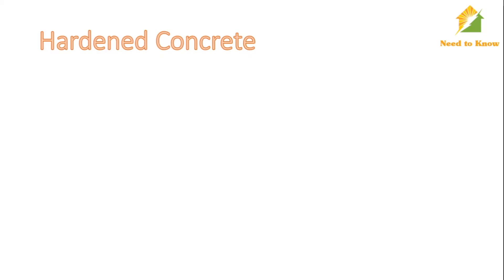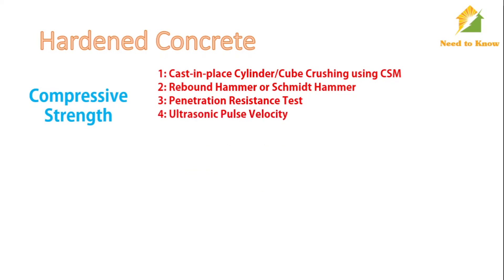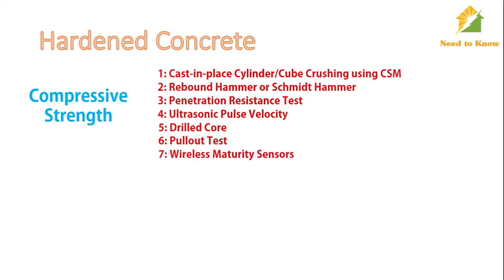Hardened concrete also has several important properties. The most important is compressive strength. Common methods to measure it include casting and crushing cylinders or cubes using a compressive strength machine. The rebound hammer (Schmidt hammer) is a non-destructive test. Other methods include penetration resistance tests, ultrasonic pulse velocity, drilling a core from a concrete member and crushing it in a compressive strength machine to evaluate on-site compressive strength, pull-out tests, and wireless maturity sensors embedded in concrete to monitor temperature and use maturity curves to estimate compressive strength.